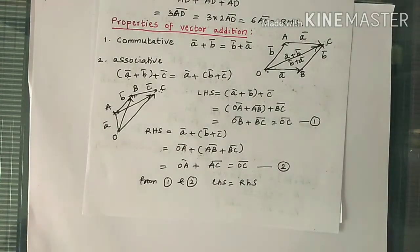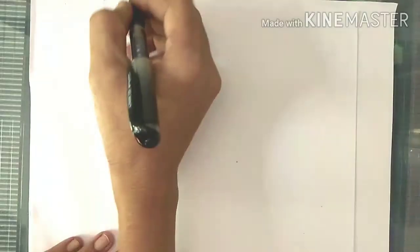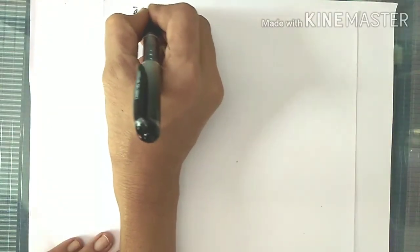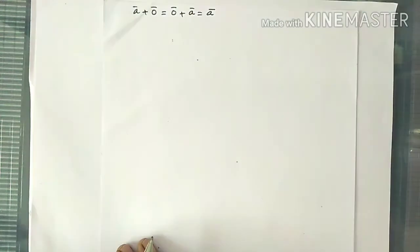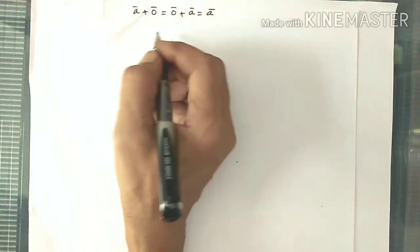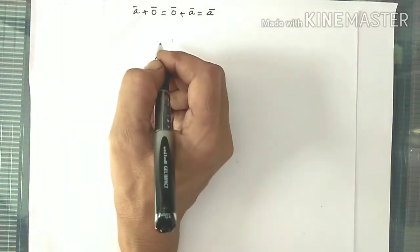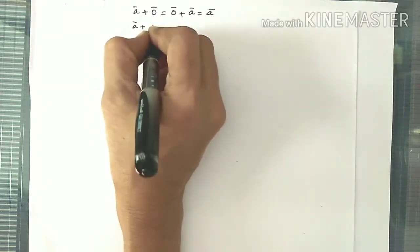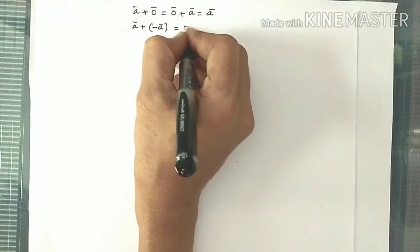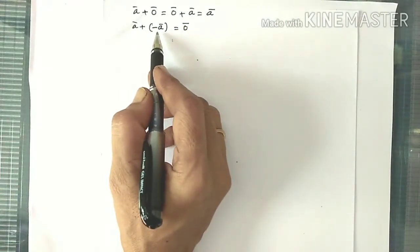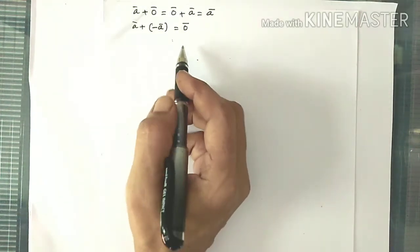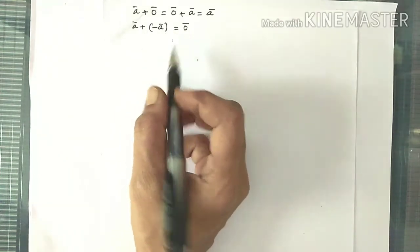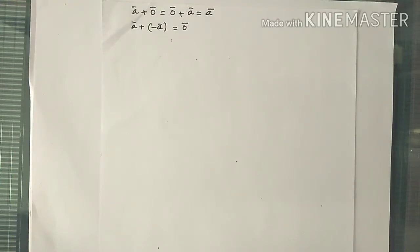Next: A bar plus 0 bar equals 0 bar plus A bar equals A bar. So 0 bar is known as the additive identity of vector addition. Next: A bar plus (minus A bar) equals 0 bar. This is known as the additive inverse. A bar minus A bar equals 0 bar — note it is 0 bar, not 0, since it is vector addition, the result is a vector.